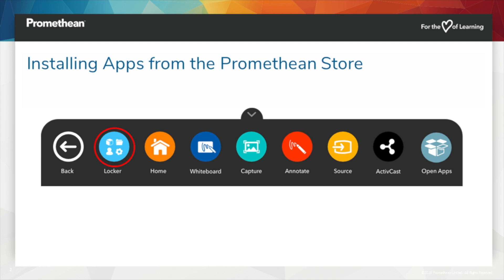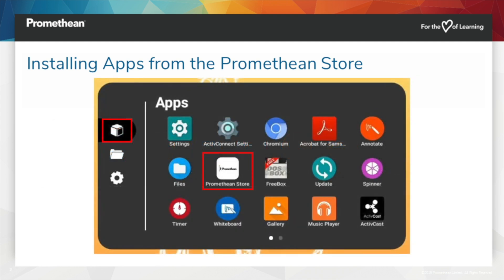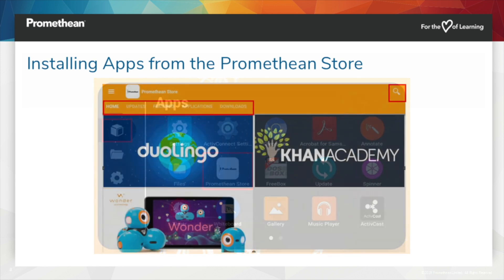To install apps from the Promethean Store, begin by selecting the Locker from the unified menu. From the Apps page within the Locker, select Promethean Store.